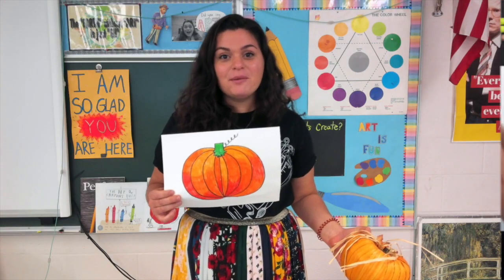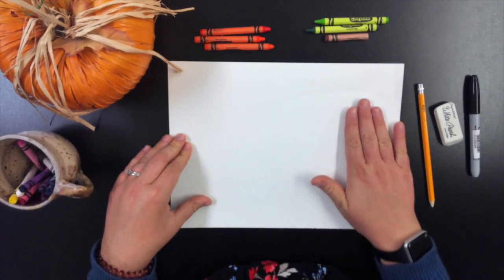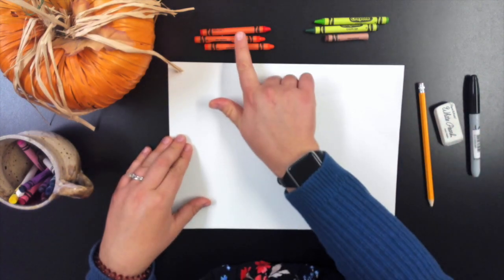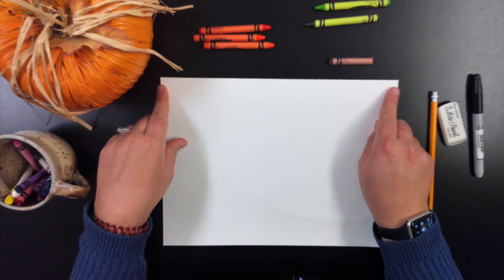Let's get into drawing our pumpkin. Supplies you will need will be paper, pencil, eraser, sharpie, and then orange crayons, green crayons, and brown crayons.